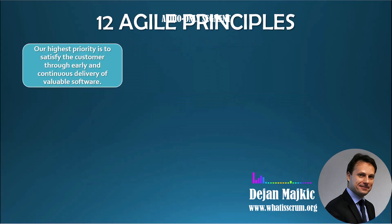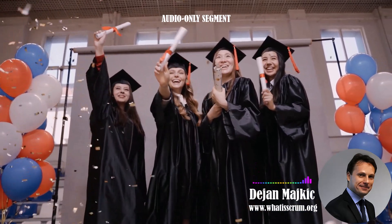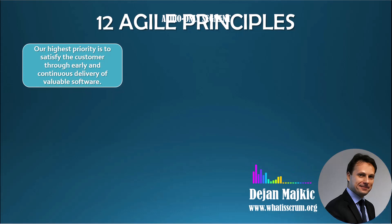Principle One: our highest priority is to satisfy the customer through early and continuous delivery of valuable software. In the world of education, our customers are the students. Our top priority is to make sure they are happy by always giving them valuable learning experiences. To make this happen, we need to get feedback early on, keep making things better, and be ready to change if needed — it's all about making sure students get the best education possible.